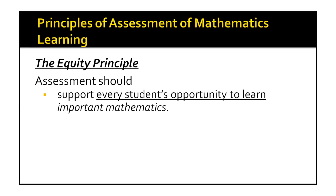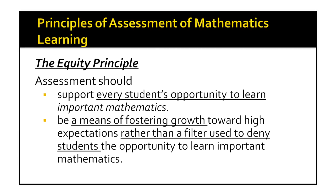The next is the equity principle, which states that assessment should support every student's opportunity to learn important mathematics. We should not define students by their performance — that these are bright learners, average, or slow learners. Teachers should believe that every student has the opportunity to learn maths and every student can learn mathematics. This is the equity principle — we do not divide students based on their performance. Also, it states that assessment should be a means of fostering growth toward high expectations rather than a filter used to deny students the opportunity to learn. Usually, when students get the score of their performance, they think that only highest scorers can perform in mathematics and low scorers cannot, and they deviate from the subject. But we should not do this filtering through assessment. Assessment has to be used for improving and knowing the student's status of learning.